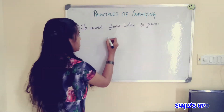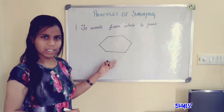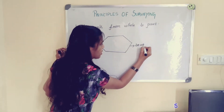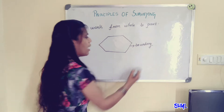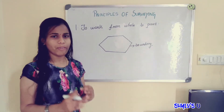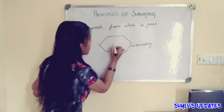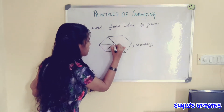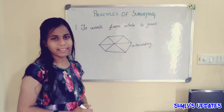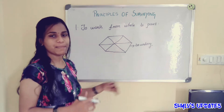Consider a hexagon. This is the boundary of the hexagon, and this is a larger area. Now, we are going to divide this boundary into a smaller number of triangles. By measuring the area of these small triangles, we can easily measure the area of this boundary.